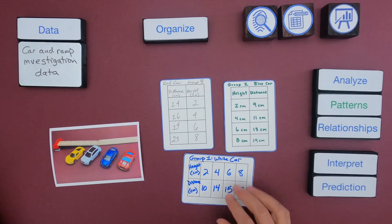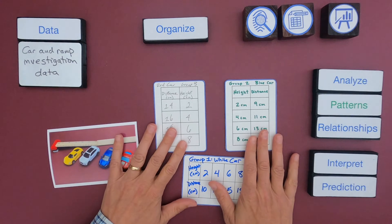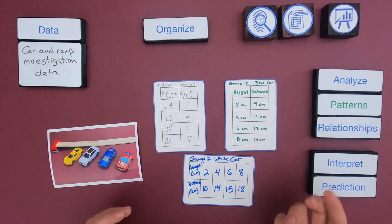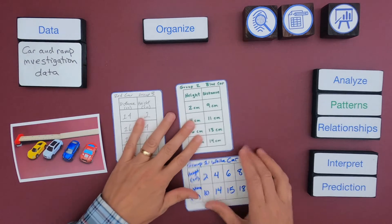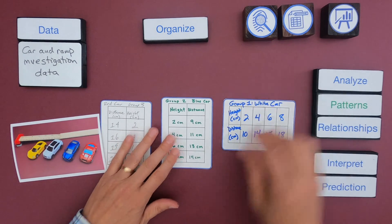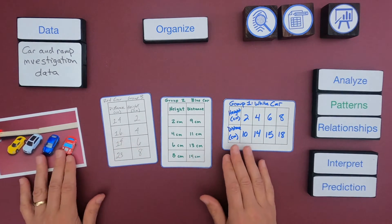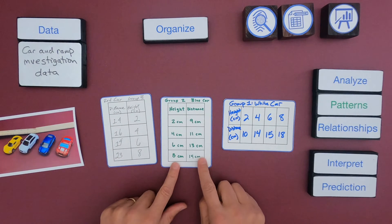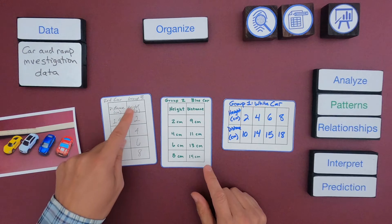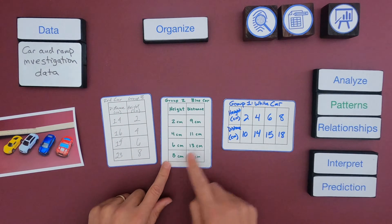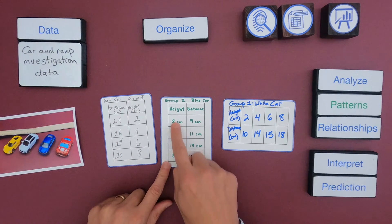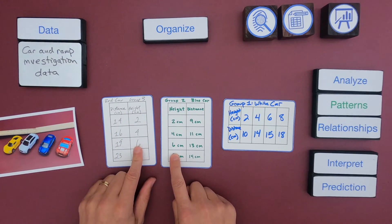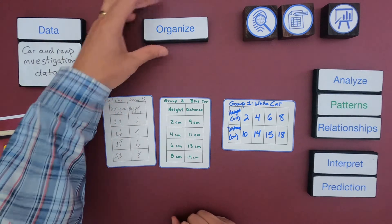The next thing I want to do is take all of this data from the different groups and organize it into one data table. A really easy way to do that is to look for data that's varying — the numbers are different, like 14 to 23 or 9 to 14 — and then look for data that remains the same. It looks like in all of these, they all changed the height of the car.